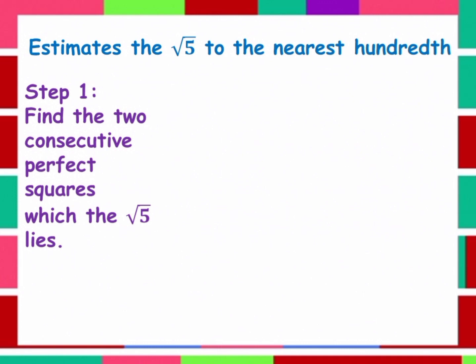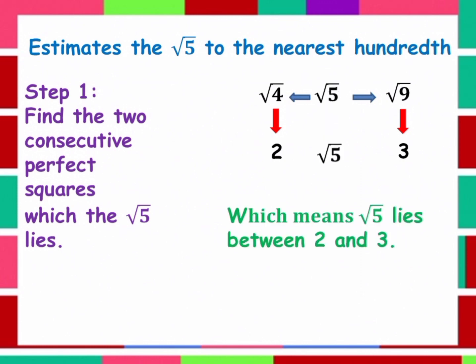In the last video, I taught you how to determine if a given number is a perfect square. Now we need to find the two consecutive perfect squares between which the square root of 5 lies. We all know that the square root of 5 is between the square root of 4 and the square root of 9. The square root of 4 is equal to 2 and the square root of 9 is equal to 3, which means the square root of 5 lies between 2 and 3.